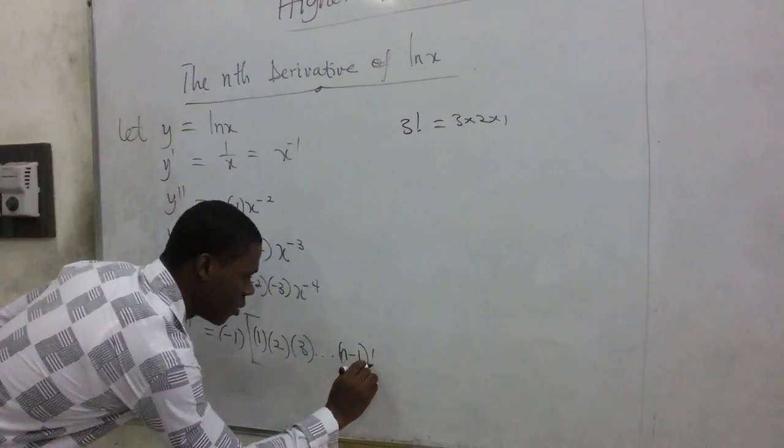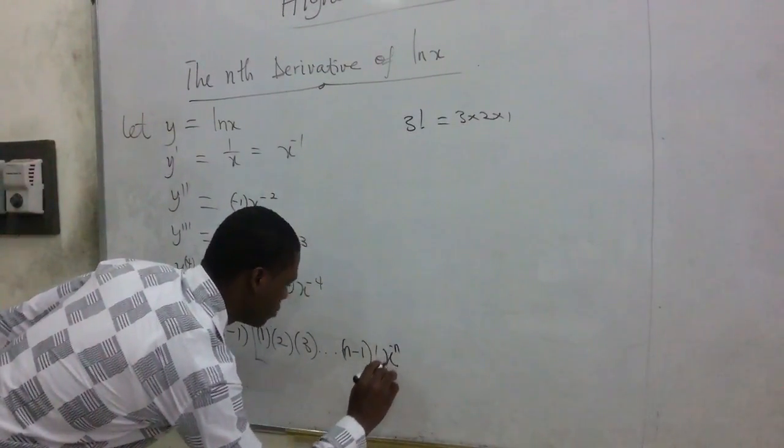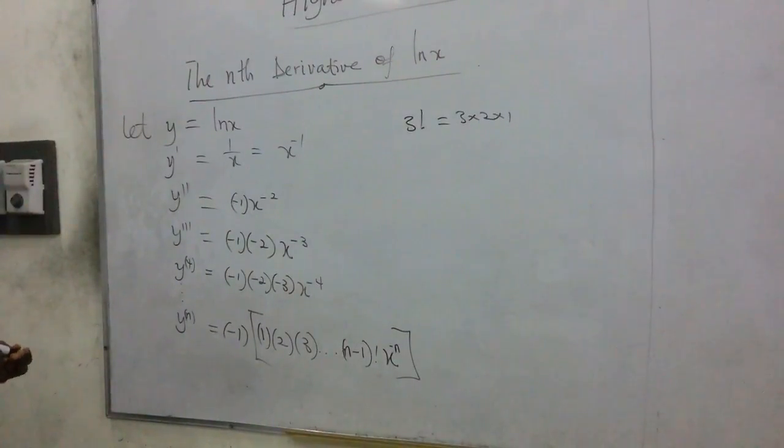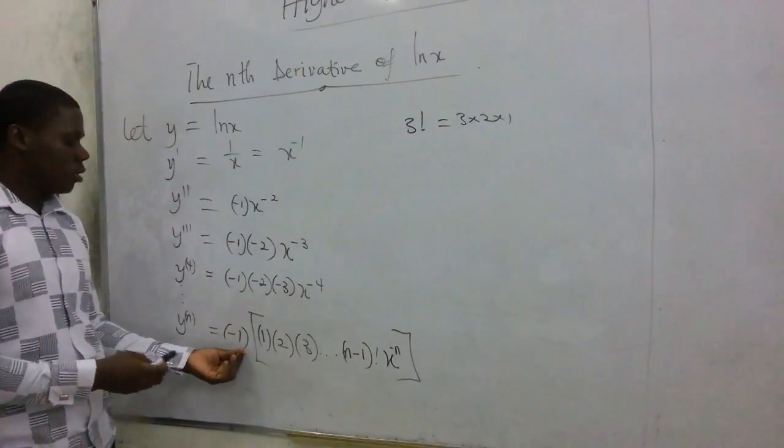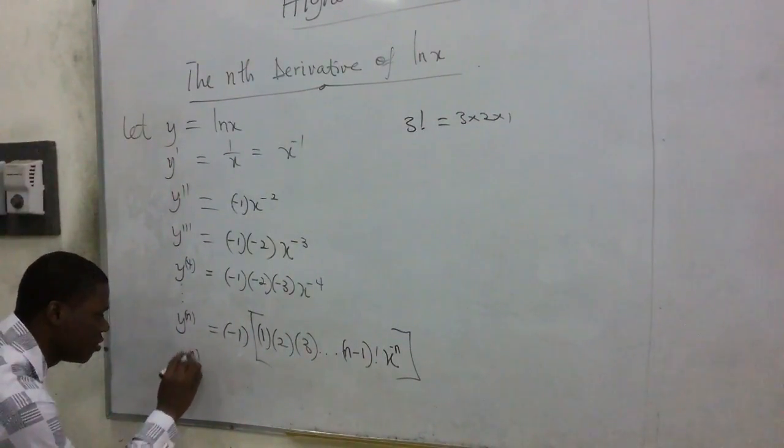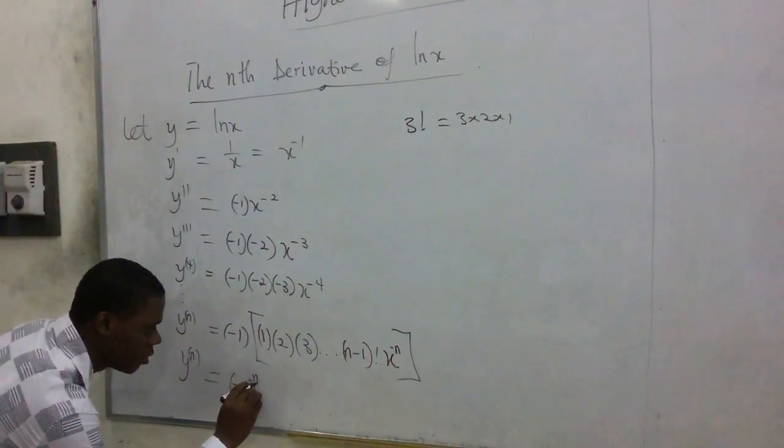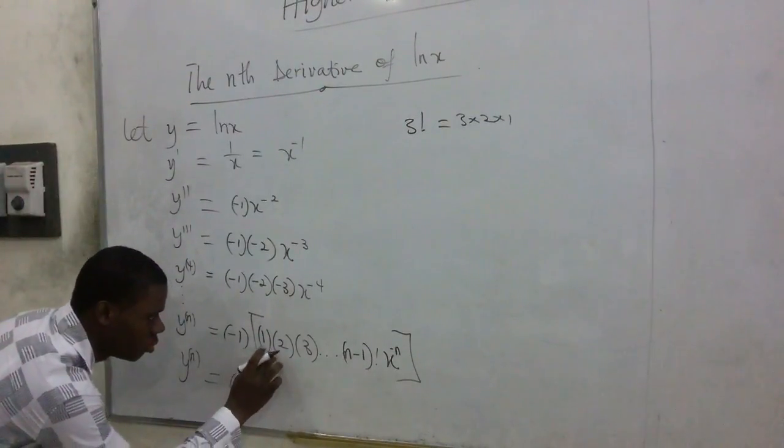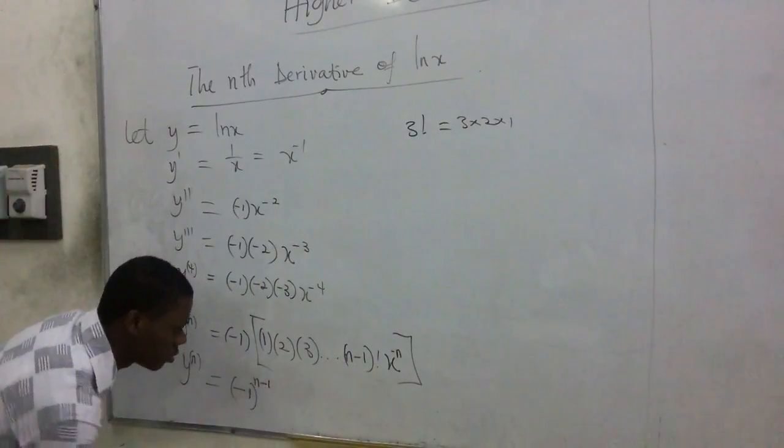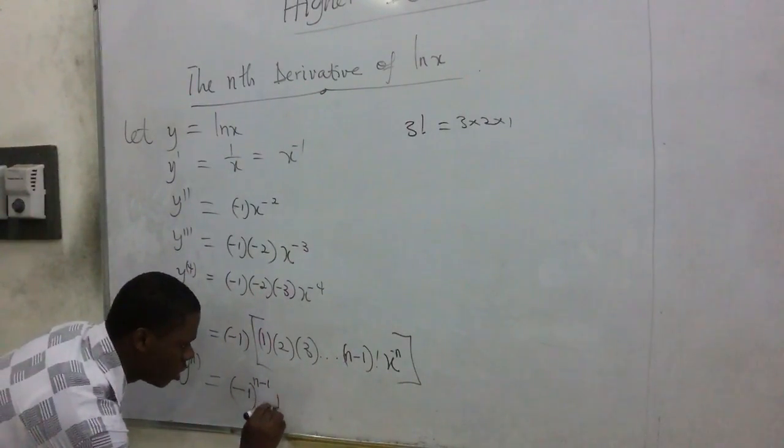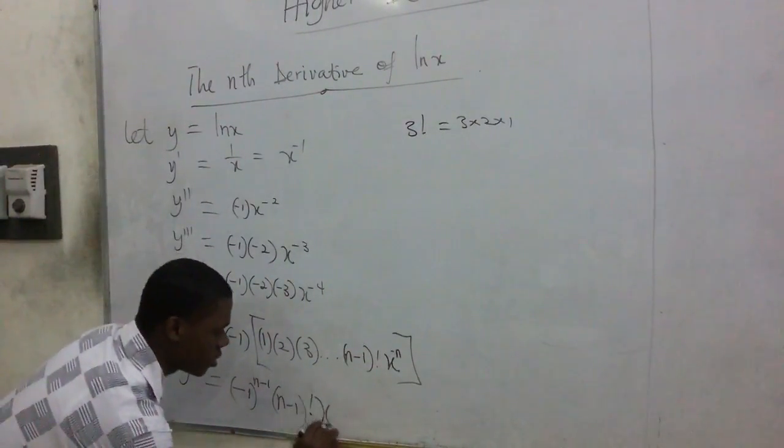Then factorial. Then multiply by x to the power negative n. So you have something like this. So this is positive. But the sign here kept changing. So on that note, we say that the nth derivative actually is going to be negative 1 to the power n, then n minus 1. So we have here n minus 1. So which we multiply by (n-1) factorial. Then we have x^(-n).